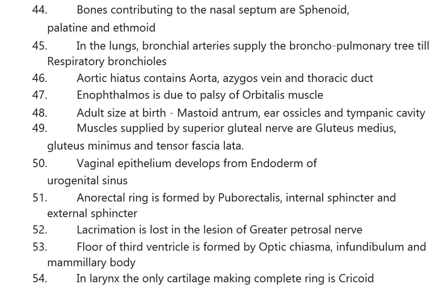Enophthalmos is due to palsy of the orbitalis muscle. Structures attaining adult size at birth are the mastoid antrum, ear ossicles, and tympanic cavity. Muscles supplied by the superior gluteal nerve are gluteus medius, gluteus minimus, and tensor fasciae latae. Vaginal epithelium develops from the endoderm of the urogenital sinus.